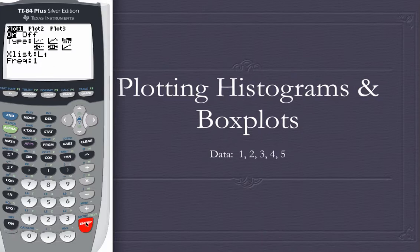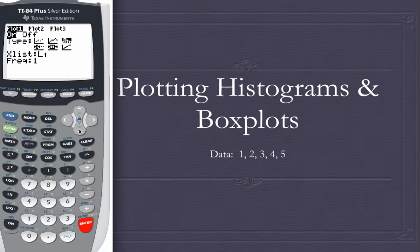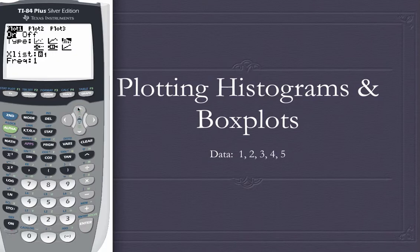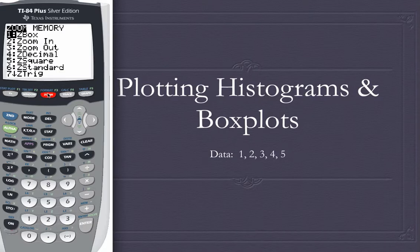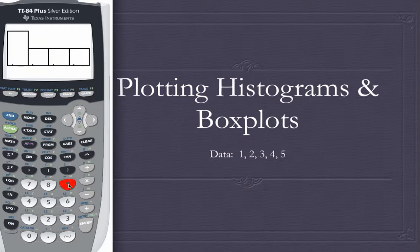As I pressed enter, it changed the options shown below — now I just have X list and frequency. Make sure that your X list is L1; if it's not, just do second and one to make it L1. Make sure your frequency says one. Then scroll back up, because if you leave your cursor down there you might get an error. Then do zoom 9 — zoom stats — and that will zoom right into your statistical data and show your histogram plot.